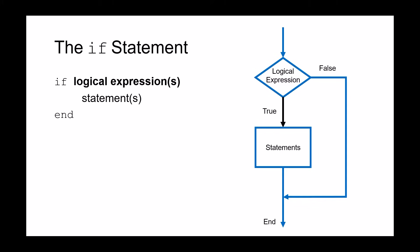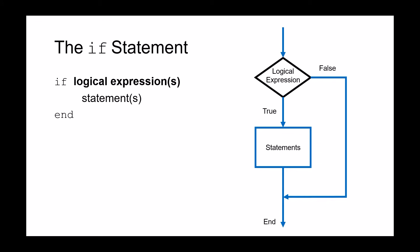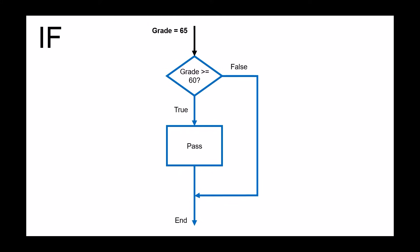And if this logical expression evaluates as true, then the program will execute one or more statements and then end. However, if this logical expression is false, the program will just end. So here's a flowchart of the example that we're going to work in MATLAB. In this case, what we're trying to do is take an input grade — in this example 65 — and if this grade is greater than or equal to 60, we will know we have passed the class and the program will end. So let's go over to MATLAB now and implement this.